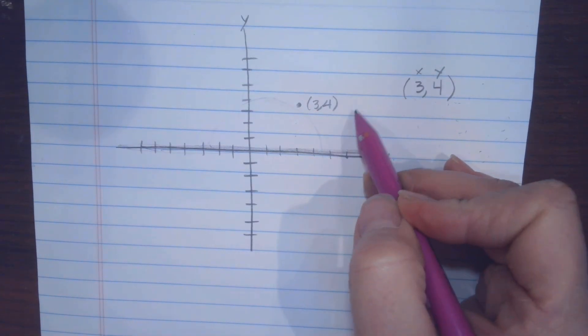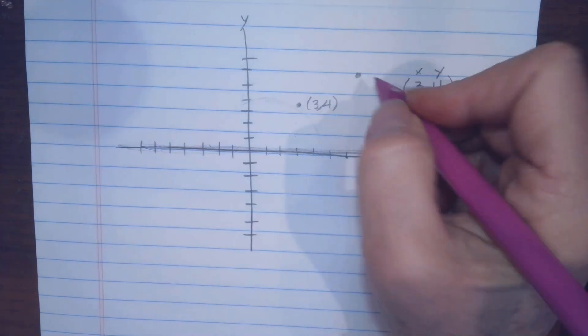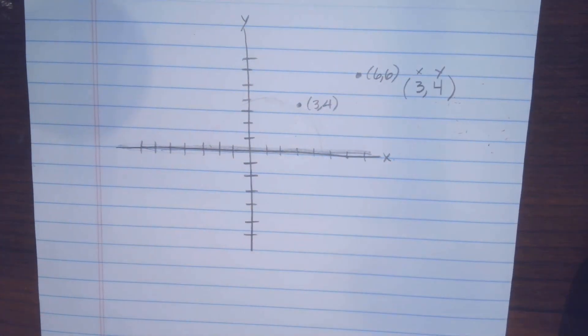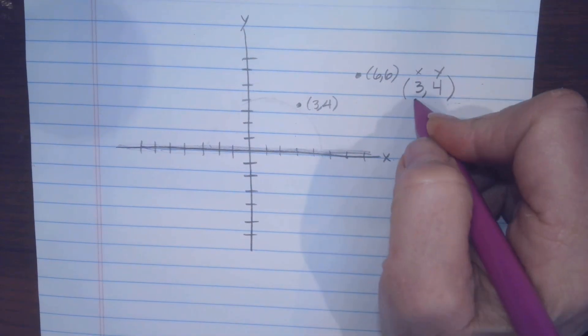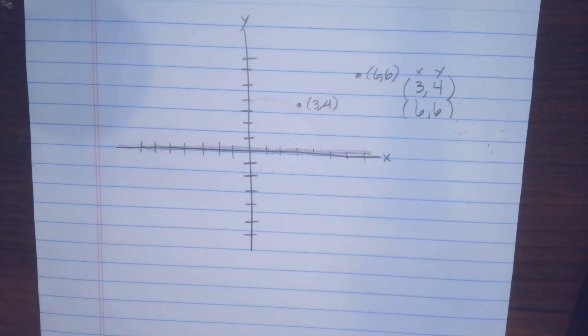1, 2, 3, 4, 5, 6. And then we can label that (6,6). Make sense? Yes. Okay.